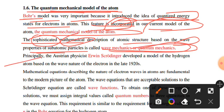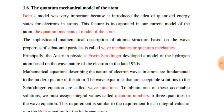Principally, the Austrian physicist Erwin Schrödinger developed a model of the hydrogen atom based on the wave nature of electrons in the late 1920s.